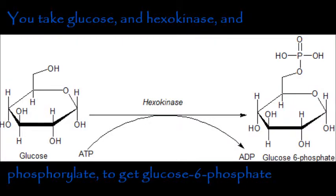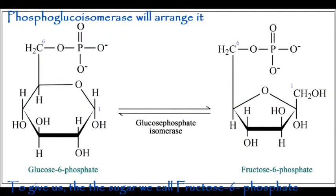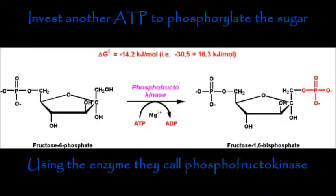We take glucose, hexokinase phosphorylates it to get glucose-6-phosphate. Phosphoglucoisomerase will rearrange it to give the sugar we call fructose-6-phosphate. We invest another ATP to phosphorylate the sugar using the enzyme phosphofructokinase.